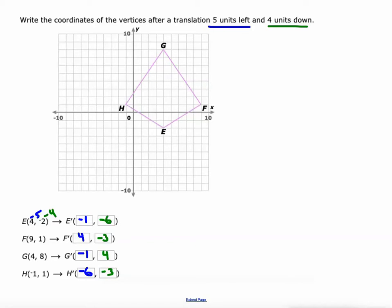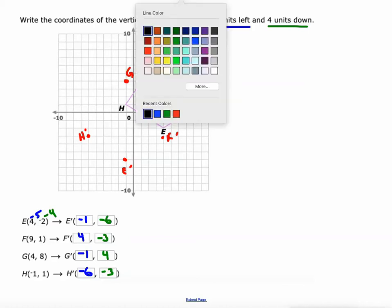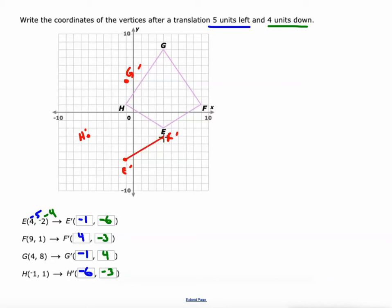And I think we should take the time to graph these just if anything, so I can show you what it looks like. So negative one, negative six. There's E prime. Four negative three. There's F prime. Negative one, four. There's G prime. And negative six, negative three. That's going to be H prime. So when we connect the dots here, connect the vertices, that is the same exact figure, same size, same shape, same angles, everything. It's just translated, slid down into the left.